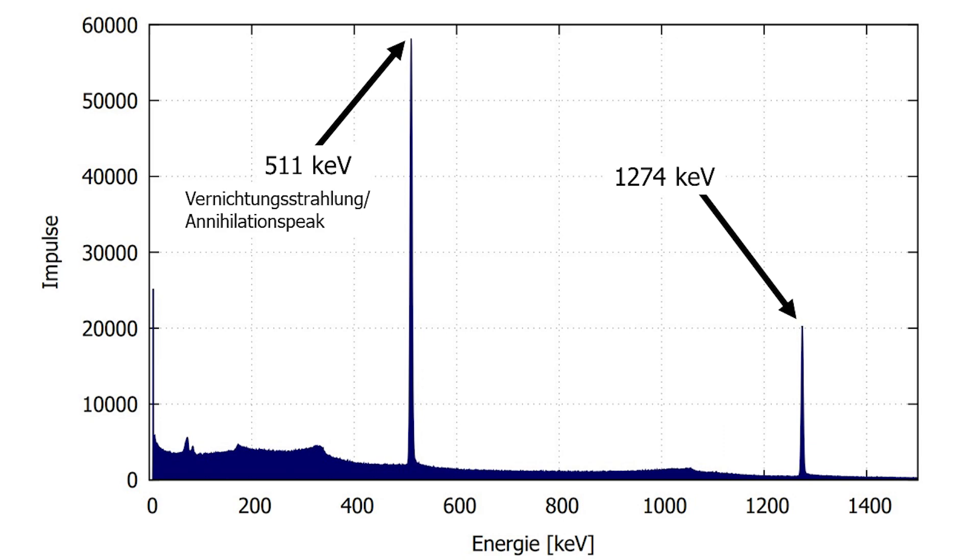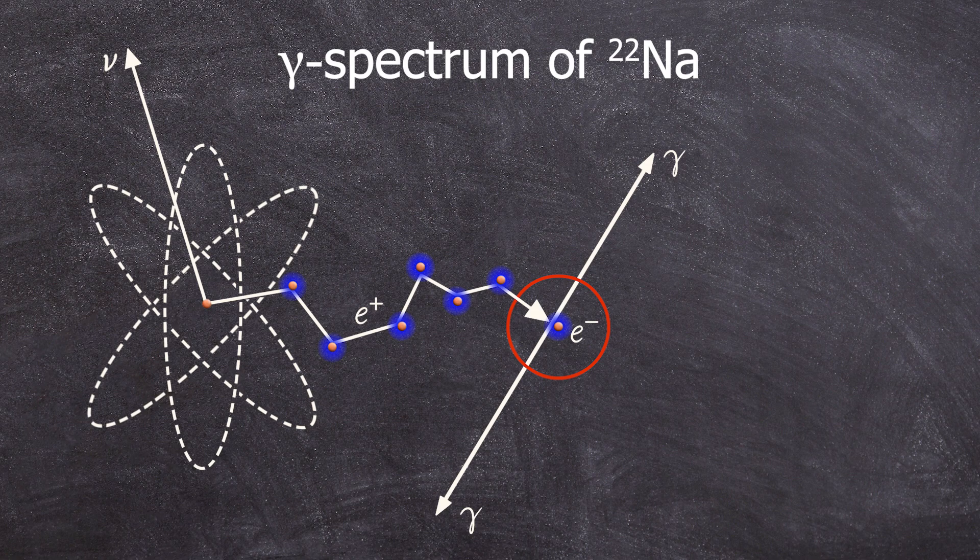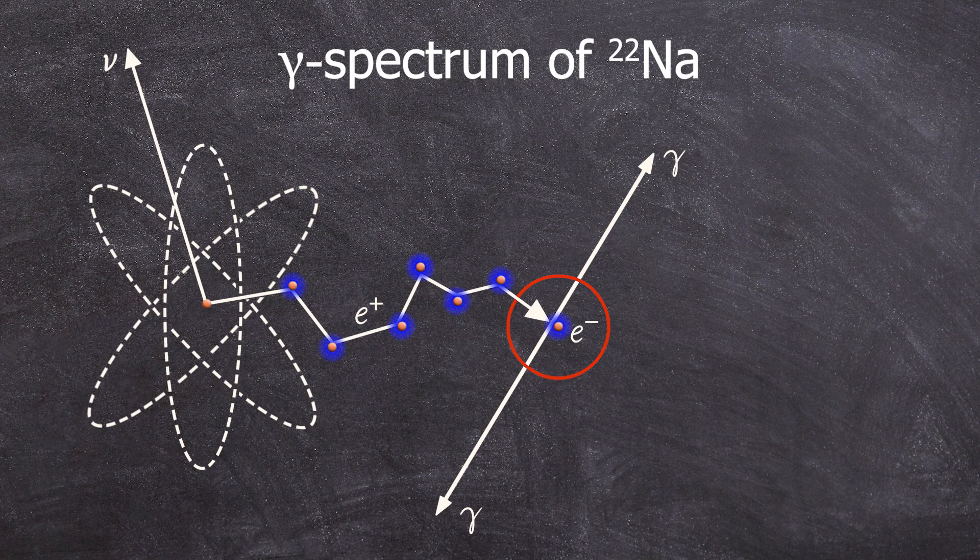Now, there are two reasons why the 511 keV line is so much more pronounced. The most important reason is that the emitted positron, which is released in 90% of the decays, definitely encounters an electron and briefly forms positronium before annihilating.